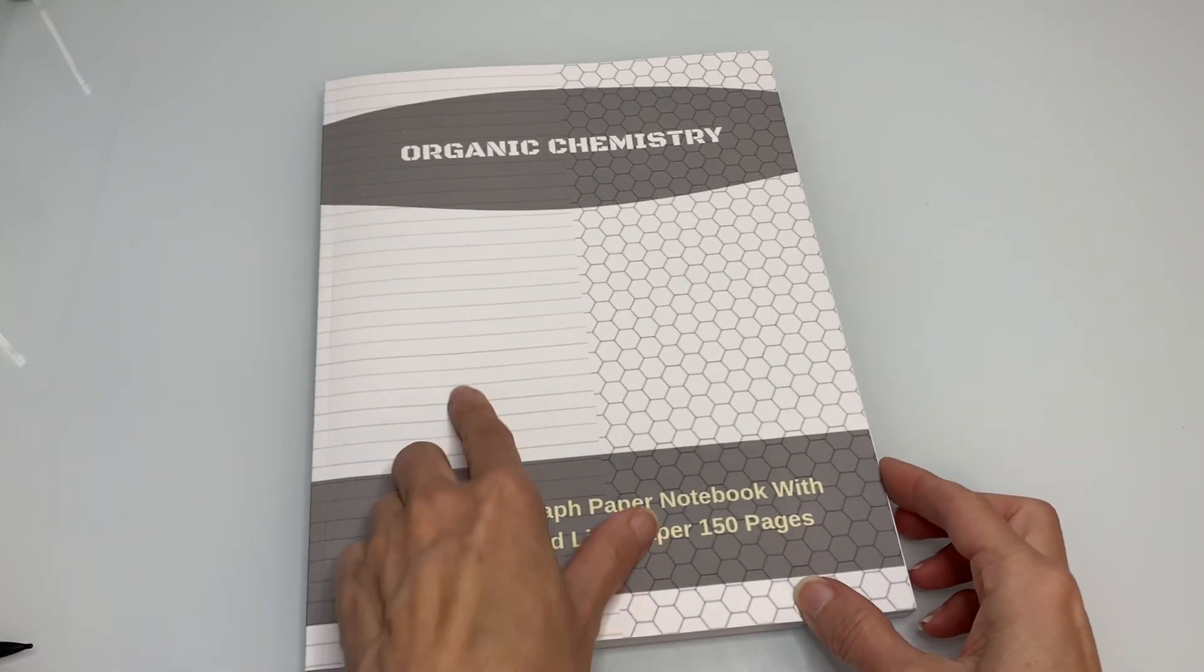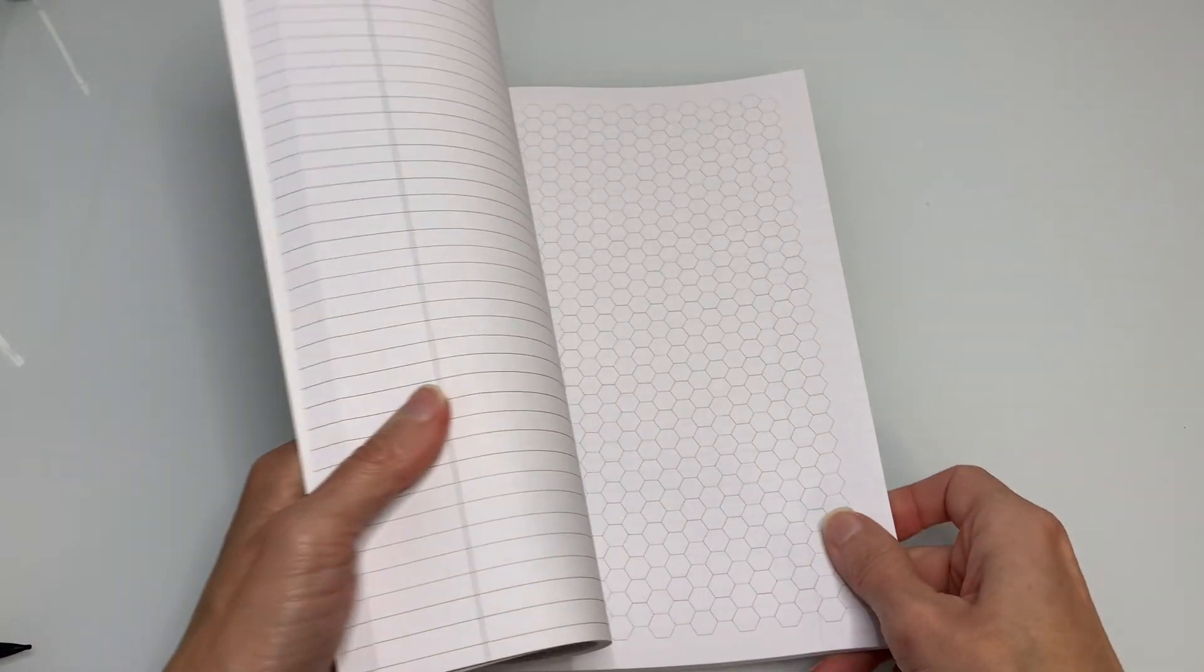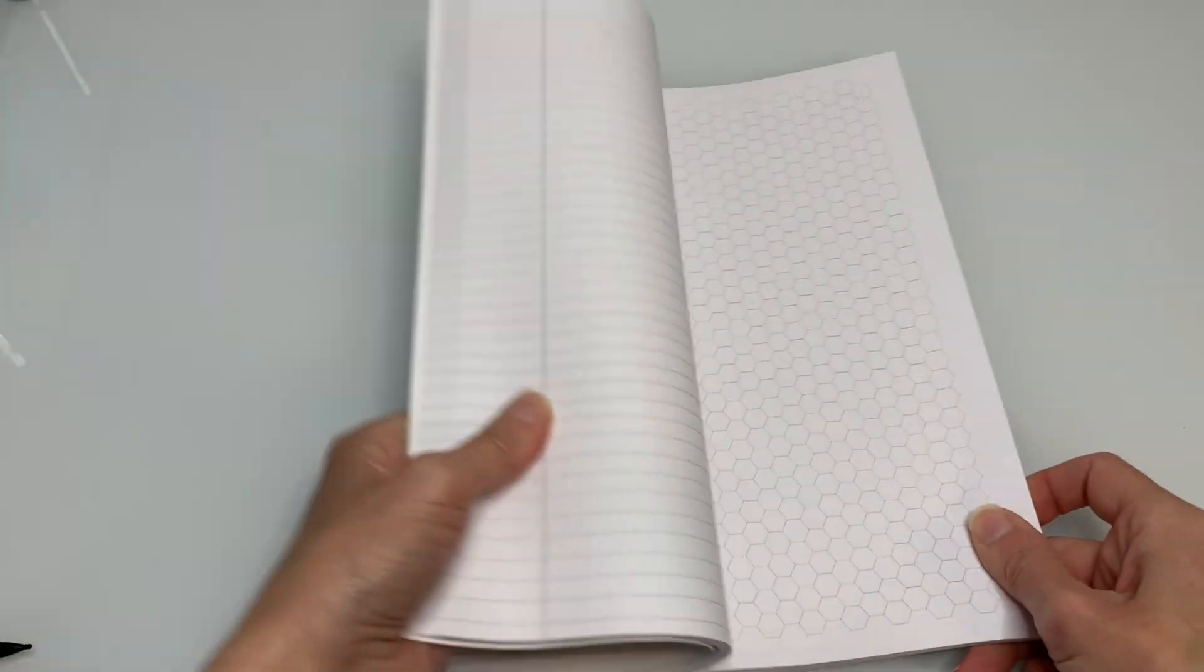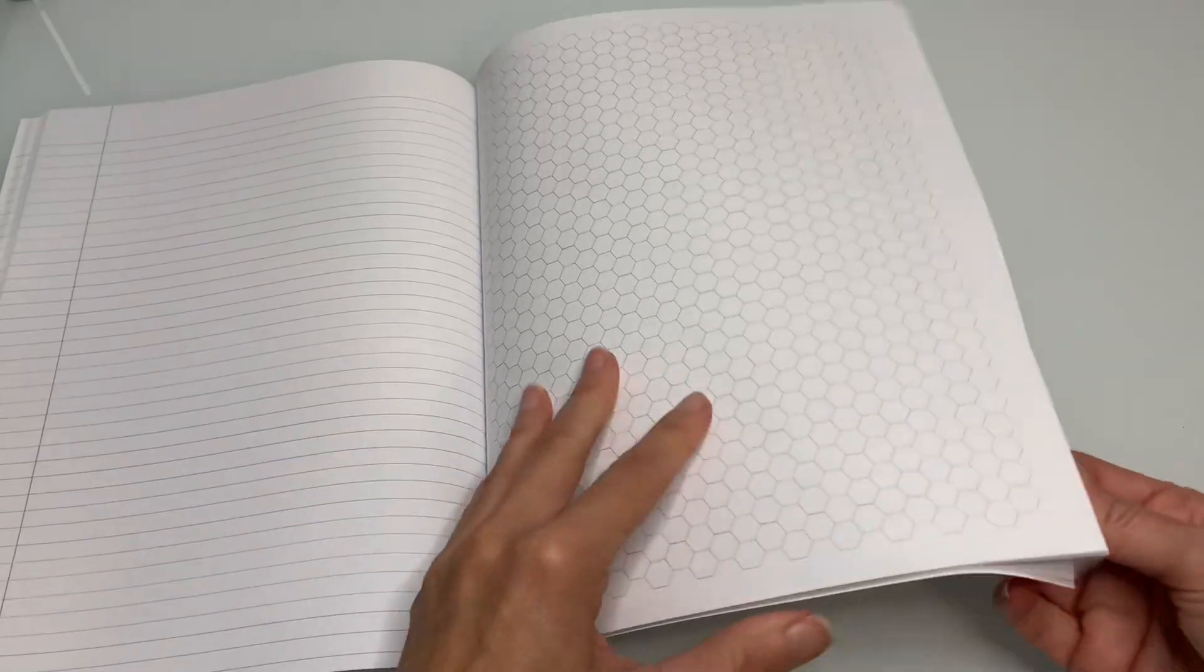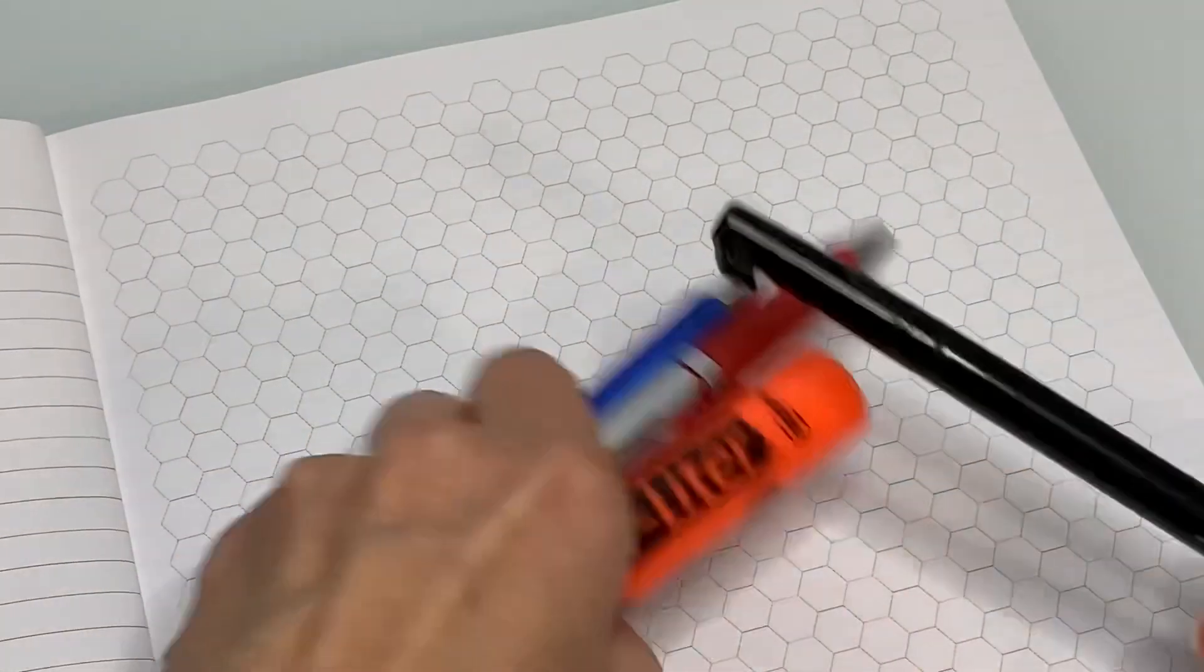Next I'm going to show you this notebook that's a combination of lines and hexagons. From the cover I was expecting the left half of each page to be lined and the right half of each page to be hexagons but you can see that that's not the case and I was kind of disappointed by that.